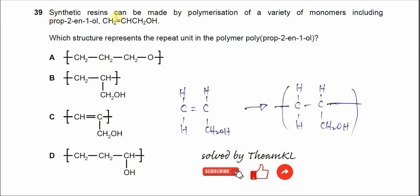Question 39. Synthetic resin can be made by polymerization of a variety of monomers including prop-2-en-1-ol. This one is prop-2-en-1-ol.